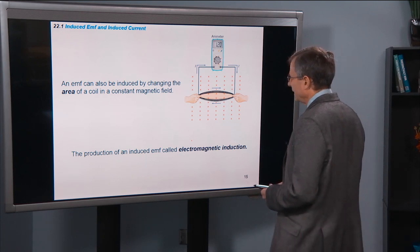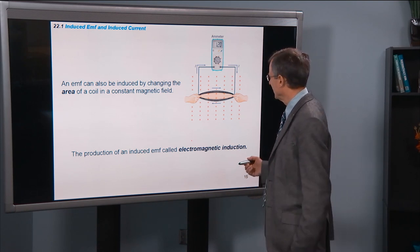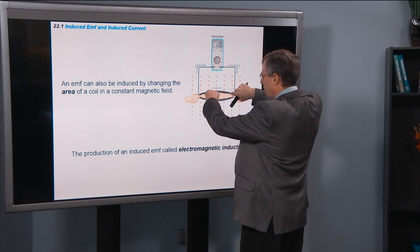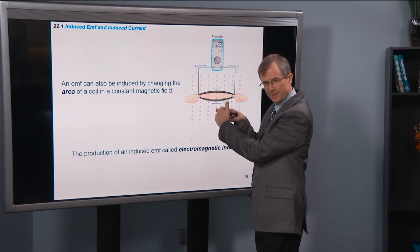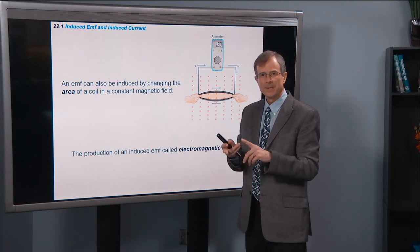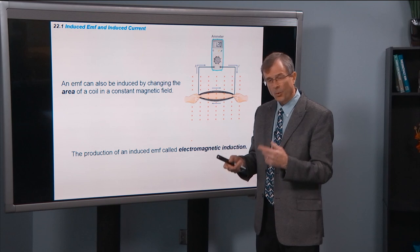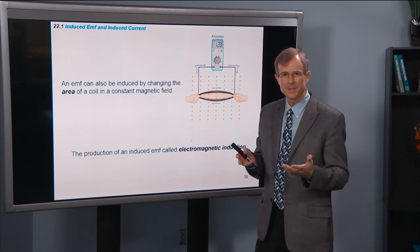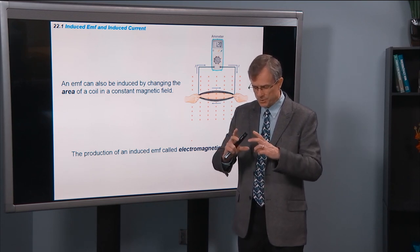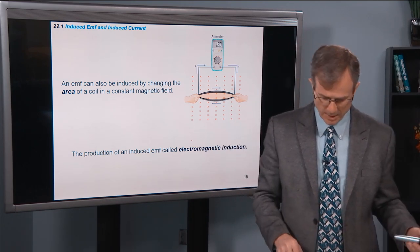So you can also induce an EMF by changing the area of the coil. So if we take this loop of wire and pull it this way, then the area gets smaller. And you can induce an EMF that way too. So there's two ways to do it. You can change the strength of the magnetic field through the coil. Or you can change the area of the coil. Or in fact, as we'll see in one of the examples, you can actually change it by changing how much of the loop is in the presence of the magnetic field. You're entering a magnetic field area.